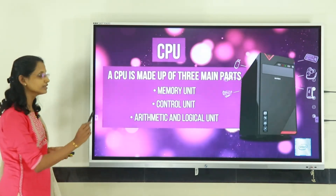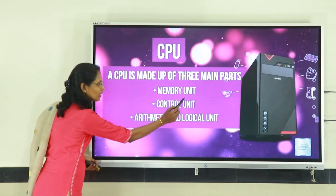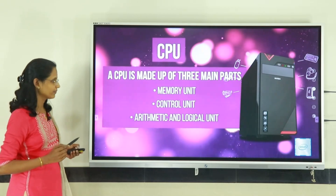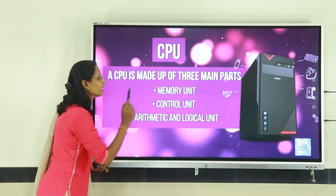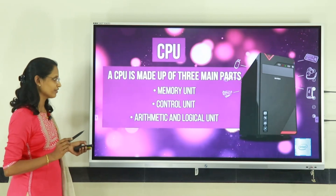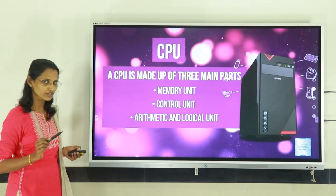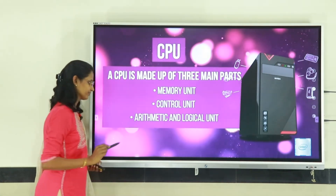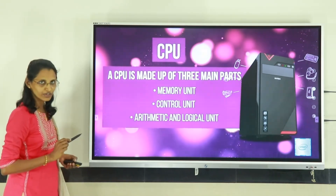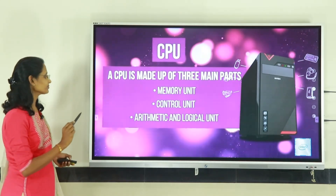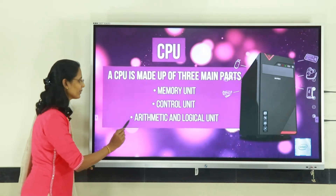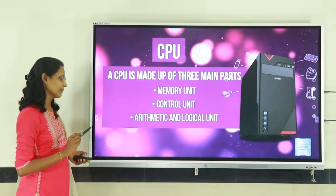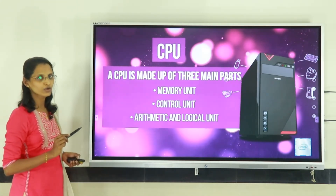The functions of each unit: the first is the memory unit — it stores all the data and information. The second is the control unit — like a traffic police, it controls all the operations of a computer system. The third is the arithmetic and logical unit — it performs all calculations like addition, subtraction, multiplication, and division. The logical unit handles comparisons like greater than, less than, equal, and not equal to.